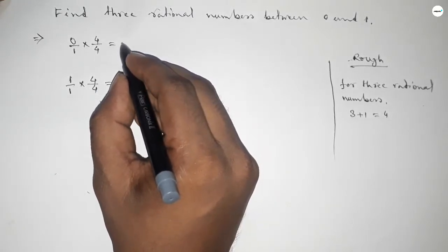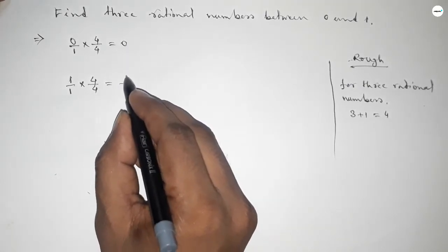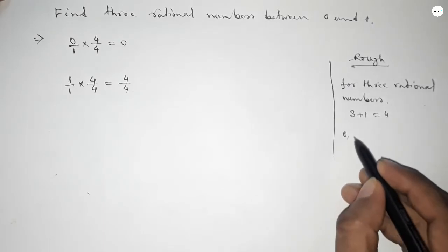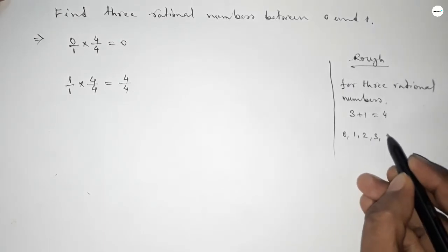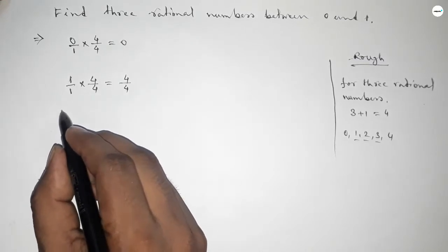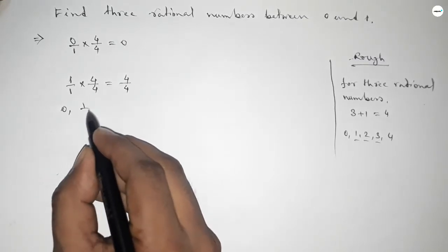Now between 0 to 4 we can find three natural numbers, and by these three natural numbers we can form three rational numbers.